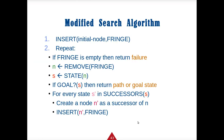A modified search algorithm inserts the initial node into the fringe and keeps going, calculating different states. We have the initial state and fringe; if we reach a goal, we return the path. We're moving toward a more heuristic model as far as calculating costs goes.